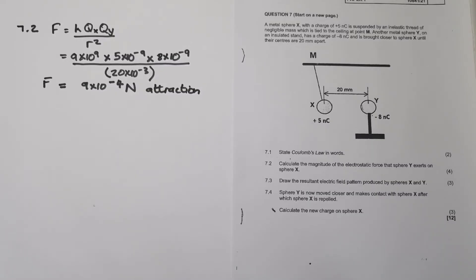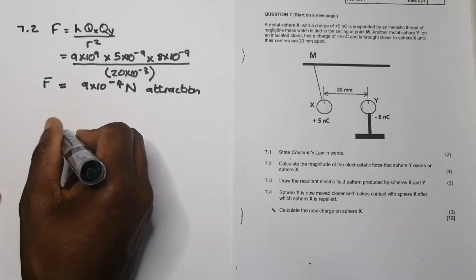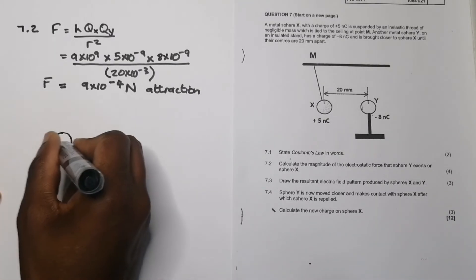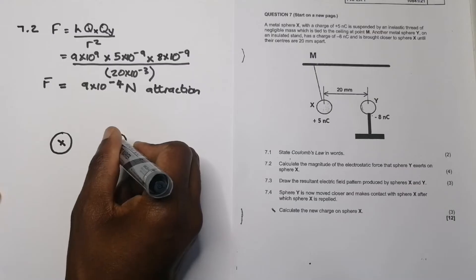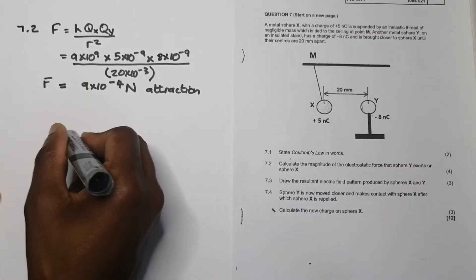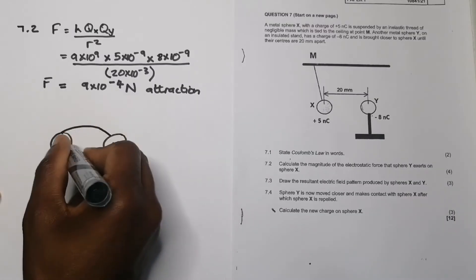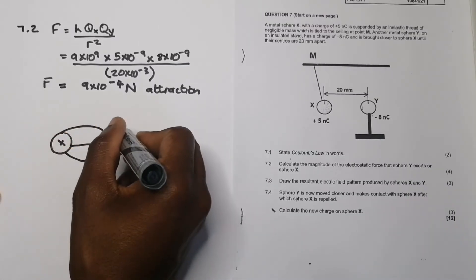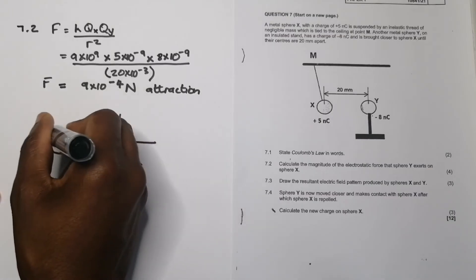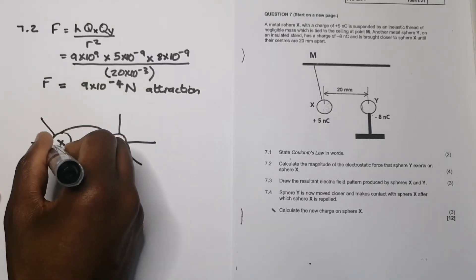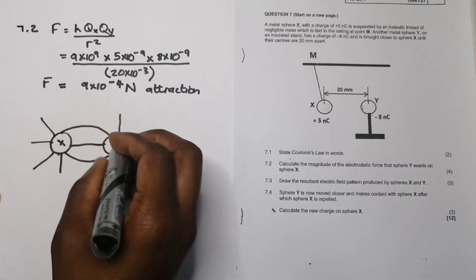And then they say, the next question, draw the resultant electric field pattern produced by spheres X and Y. So in this case, I'm looking at the field pattern between those two. This is going to be positive X and this would be Y. So because they are attracting each other, you'd have field lines that look more or less like this. Make sure that they're 90 degrees there.